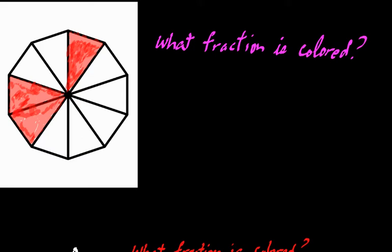This first problem asks a very simple question — maybe not so simple. We have a polygon here. Counting its sides: 1, 2, 3, 4, 5, 6, 7, 8, 9, 10 — so it's a decagon. And it's asking what fraction of this decagon is actually colored.